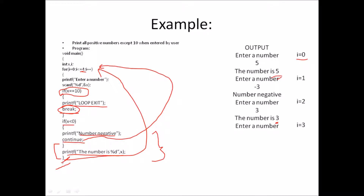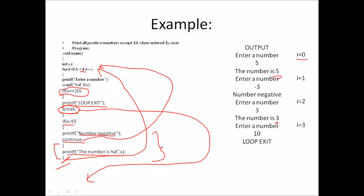When i equals 3, 3 is less than or equal to 4, which is true. Enter a number — that number is 10. If x is equal to 10, the break keyword is encountered. The break keyword causes control to exit the for loop, stopping execution of the program loop.